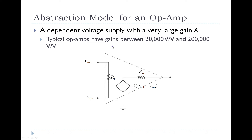Typical op-amps that we are going to work with are going to have gains between 20,000 and 200,000 volts per volt. So for every volt of potential difference developed across the input terminals, we're going to multiply that difference by 20,000 or 200,000 and provide a much larger voltage output. So if there's one volt of input across the inverting and non-inverting terminals, then the output voltage, in theory, would be 20,000 to 200,000 volts. Of course, we're going to see some limitations with that.